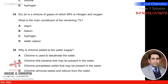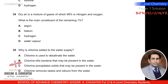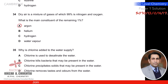Question thirty-four: dry air is a mixture of gases of which 99% is nitrogen and oxygen. What is the main constituent of the remaining 1%? The answer is argon.